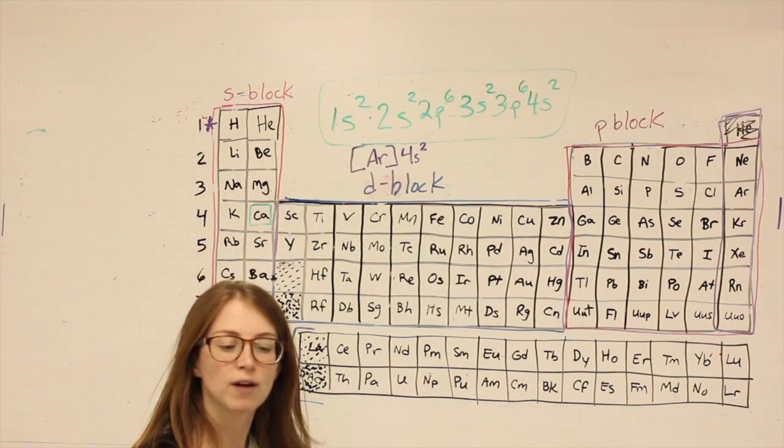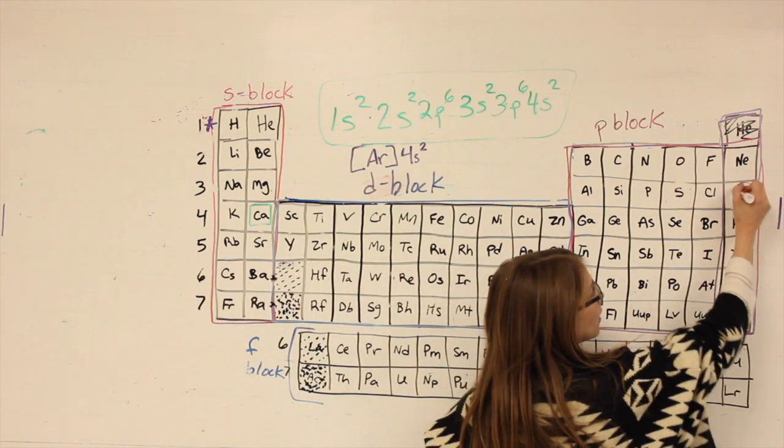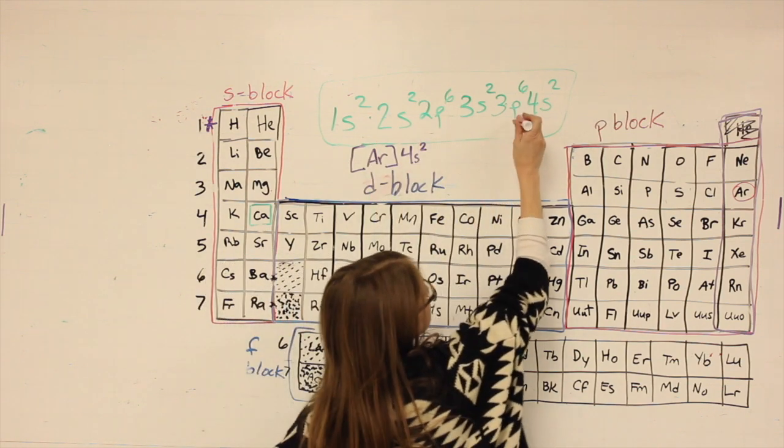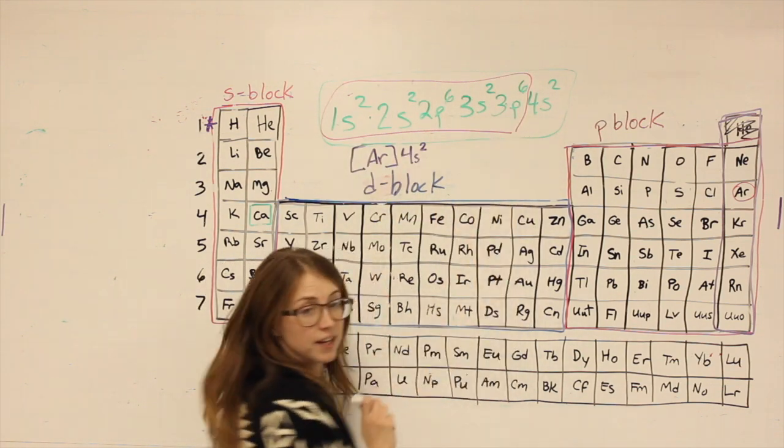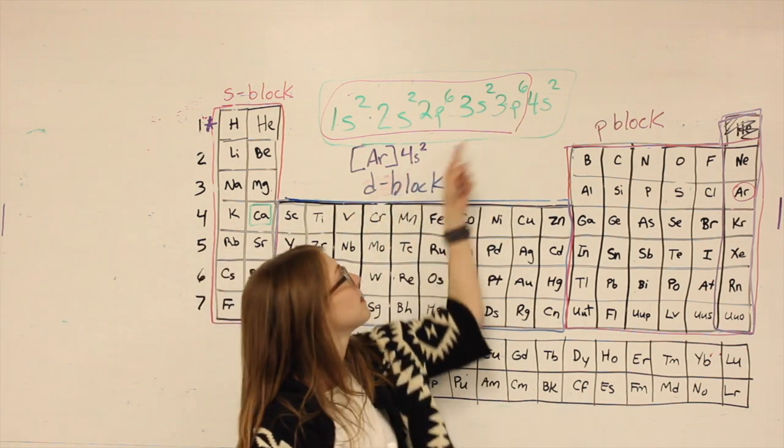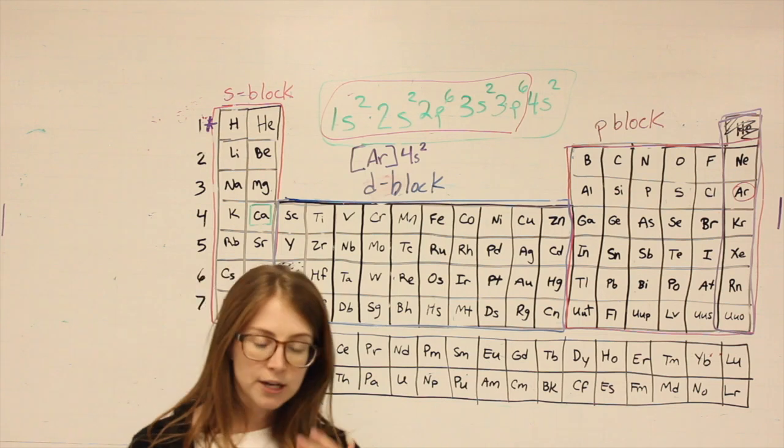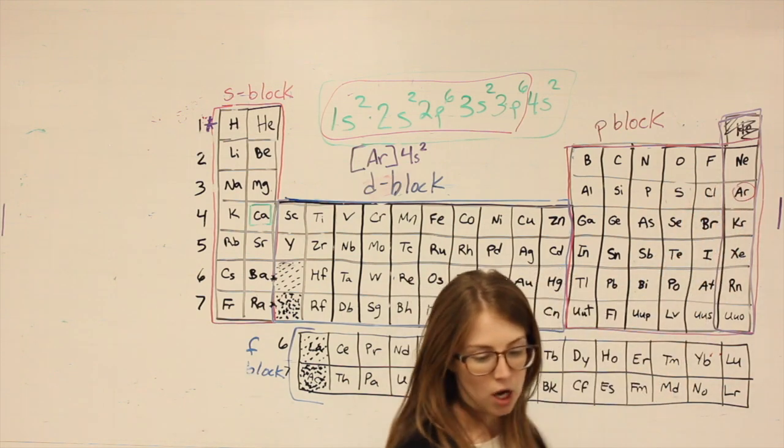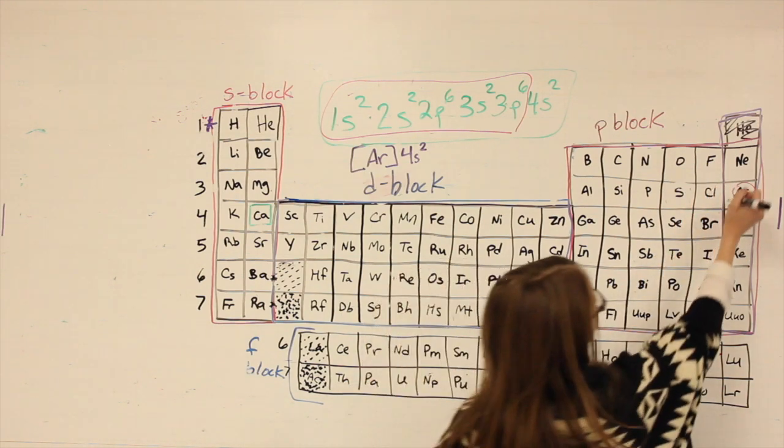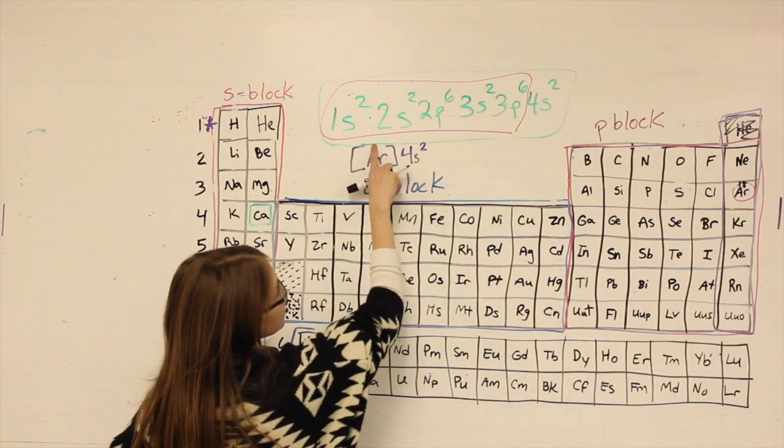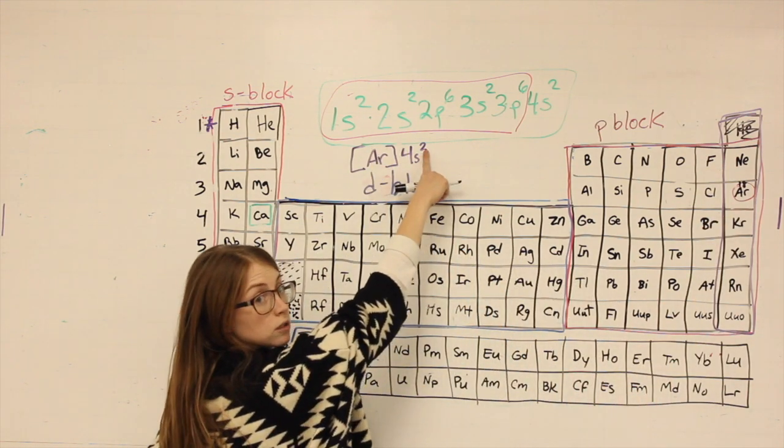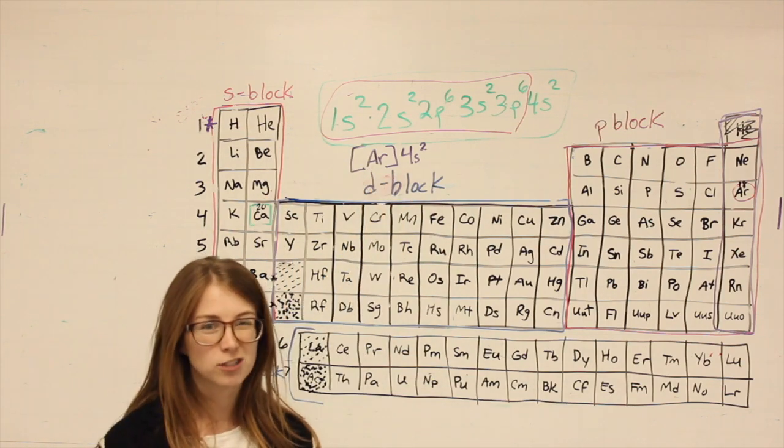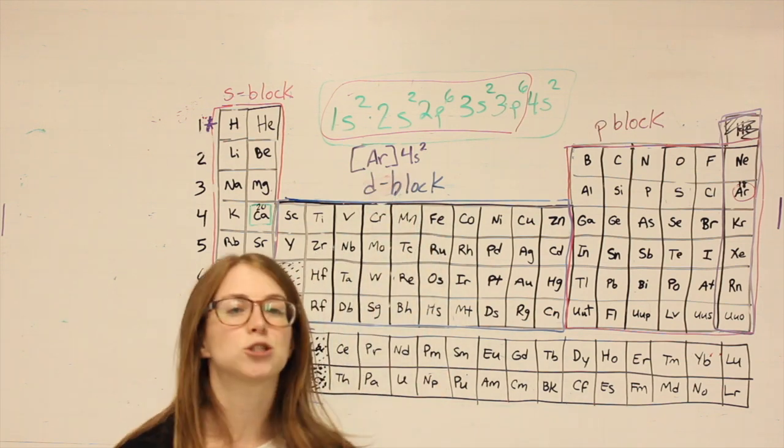The reason this works, if you write out the electron configuration for argon, you would get 1s2, 2s2, 2p6, 3s2, 3p6. That portion of it is replaced by argon in brackets and then the end should be the same. If you're double checking your work by looking at total number of electrons, it still works. Argon, the number on top for argon is 18. So argon has 18 electrons plus 2 gets us 20, and calcium, the number on top here is 20. So that still accounts for all the electrons. We just didn't show them all. Some of them are hiding in that structure of argon.